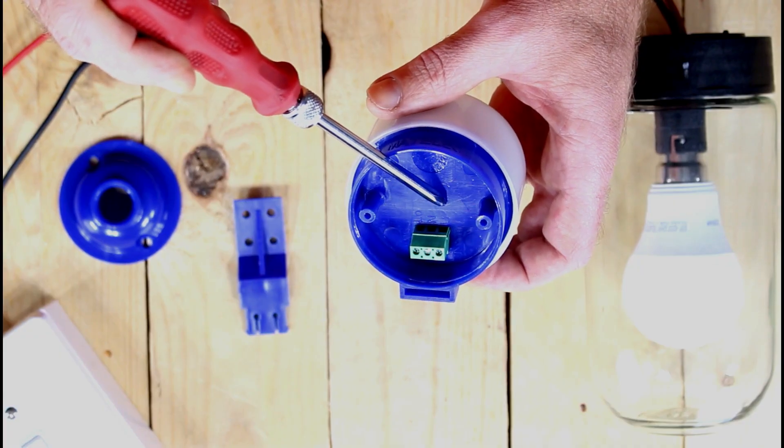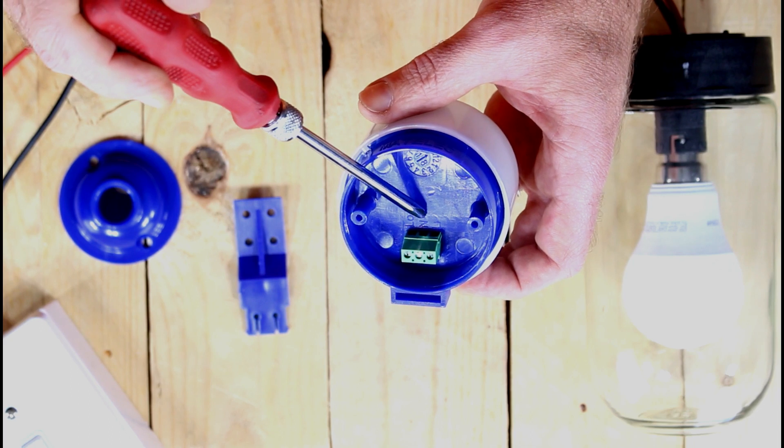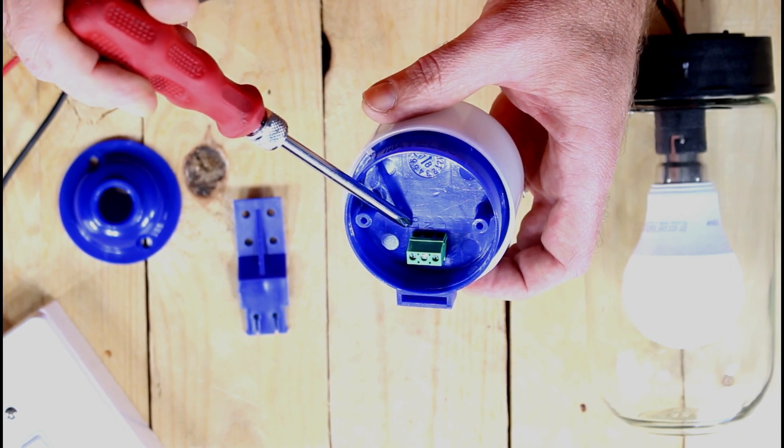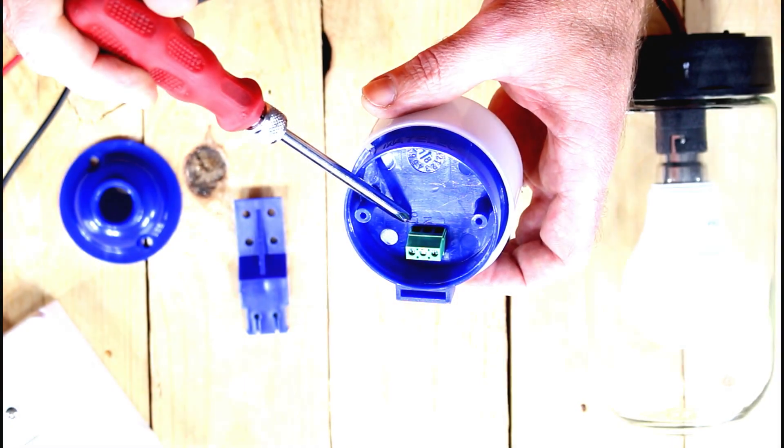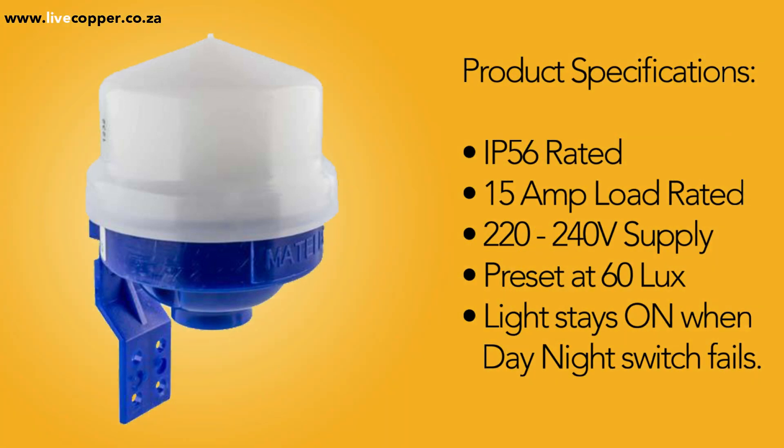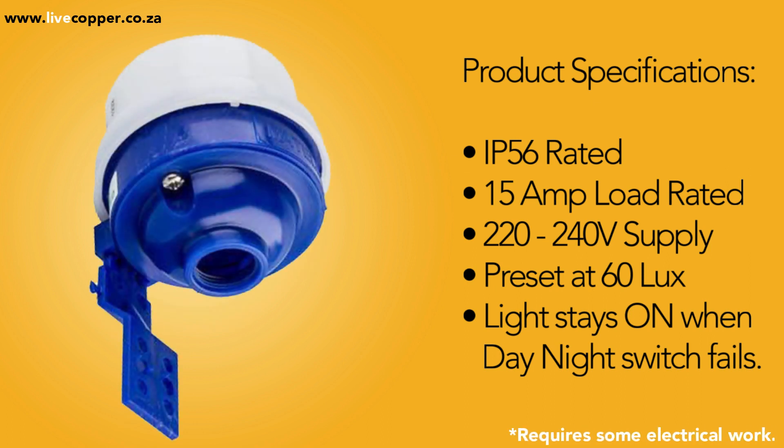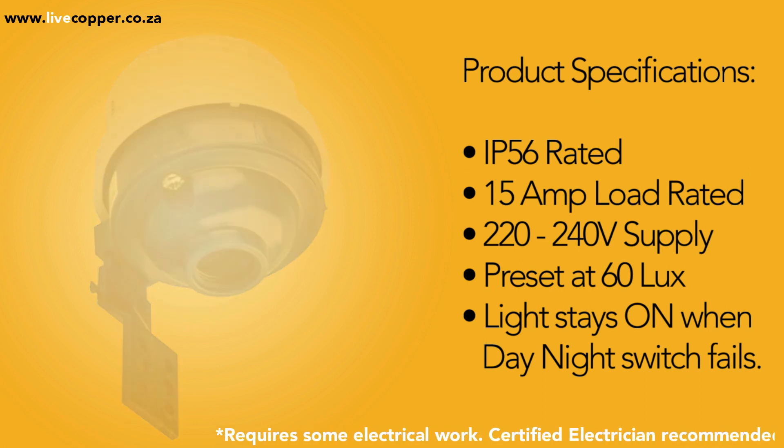LI stands for load in, N is for neutral and LO is for load out. Where there is a green-yellow earth wire present from both the light source as well as the supply side, connect them to each other. Metal light fittings generally all have an earth wire. On the other hand, PVC light fittings generally don't have an earth wire.